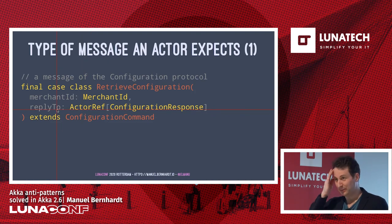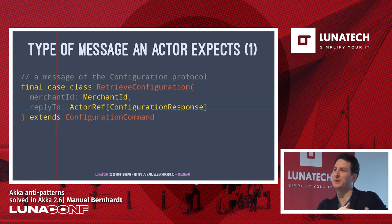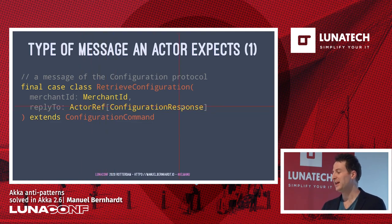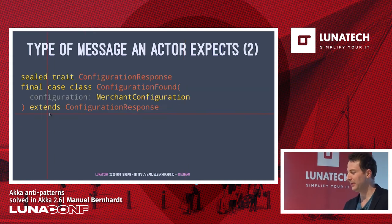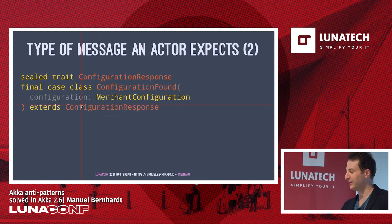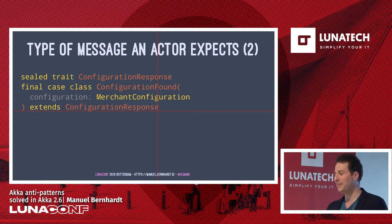An example message with this API: you define a message class, say RetrieveConfiguration, extending that marker trait. The big difference from classic Akka is you have to specify if the message needs a reply. You provide a typed ActorRef indicating the type of the response — you can't just reply with anything at random. For example, on success I could say the configuration was found, or on failure that it was not found.